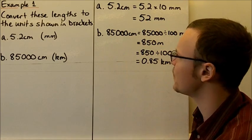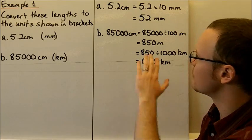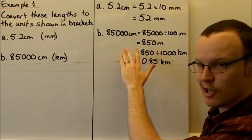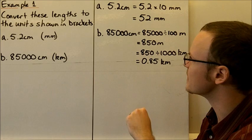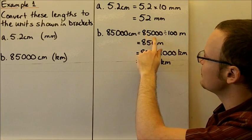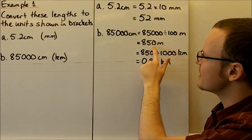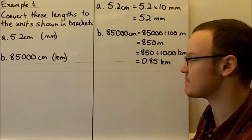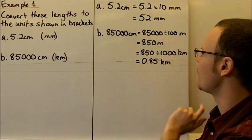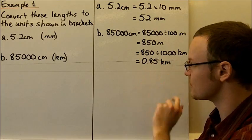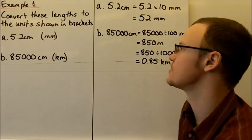For 85,000 centimetres, we need to convert first to metres and then to kilometres. So 85,000 divided by 100 gives 850 metres, and then 850 metres divided by 1000 gives 0.85 kilometres.